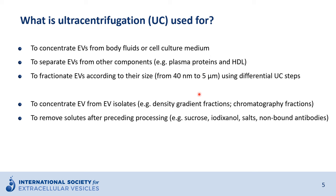When other isolation techniques are used — for example, density gradient fractionation or chromatography — EVs are often isolated from those fractions also by ultracentrifugation. Ultracentrifugation is also used to remove solutes from preceding processing steps. For example, when using sucrose density gradient centrifugation or iodixanol centrifugation, one may want to remove the sucrose or iodixanol by ultracentrifugation. Also, buffer exchange, removal of certain salts, and removal of non-bound antibodies can be achieved using ultracentrifugation.